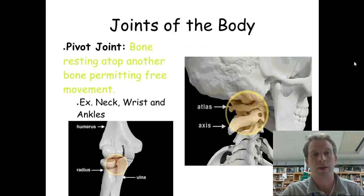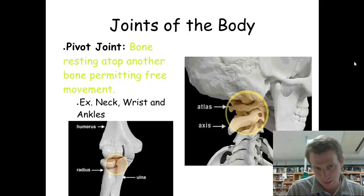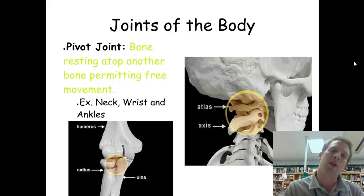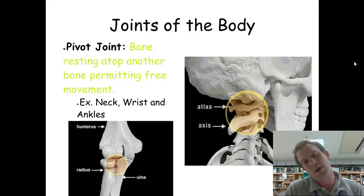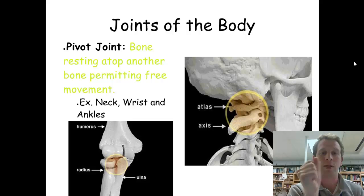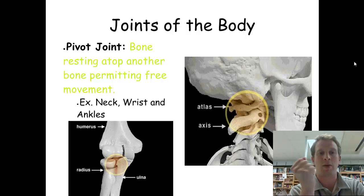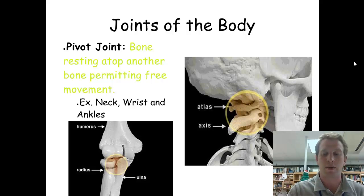Then we get a pivot joint. It's basically one bone that rests on top of another bone, and it gives you pretty free movement. My neck is an example — I can move my head around in all kinds of free movement because it's just sitting on top of my neck. The wrist is another one; I can move my wrist all around because the hand is basically just sitting on top of my arm. The ankle is another one — you can move your foot all around in different directions.